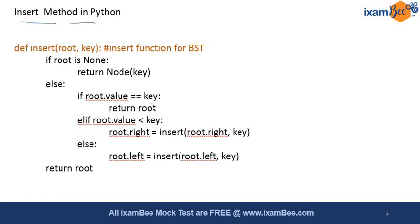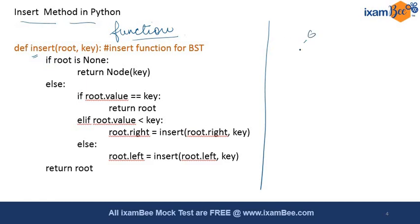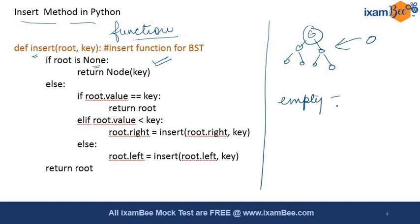Now we are going to understand the insert method. We will discuss only the function responsible for insertion in the binary search tree. First, we check the extreme condition: if the root is none, it means we have an empty tree and insertion is happening for the first time. In that case, we return only the node with the key value. If the root is not none, we have either the left or right side to explore.